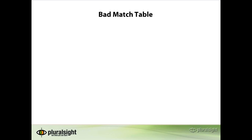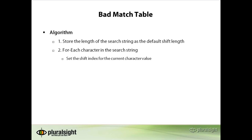The bad match table determines how far the string can slide when a mismatch occurs. The algorithm is very straightforward. First, the length of the string being found is stored as the default length to skip when a mismatch occurs. Next, each character is added to the bad match table, such that the character index returns the value that is the number of characters that can be skipped upon the next mismatch.